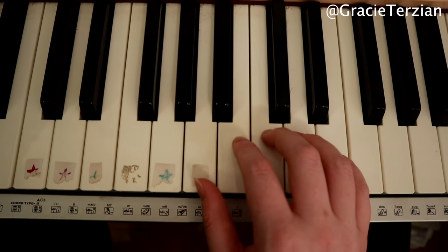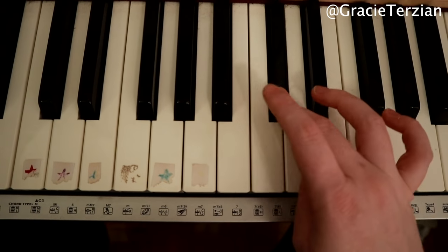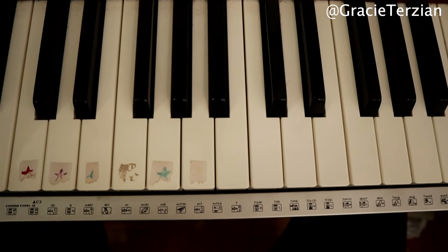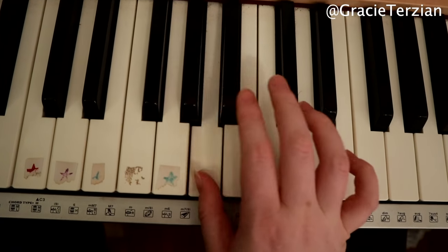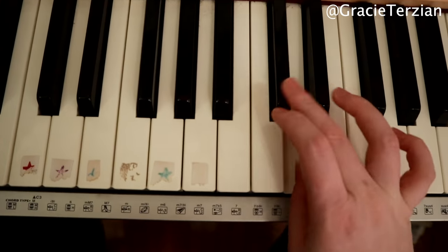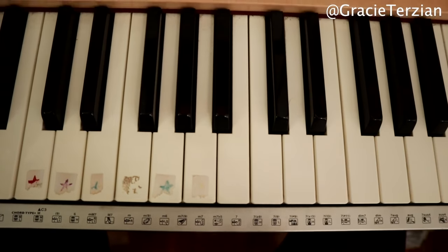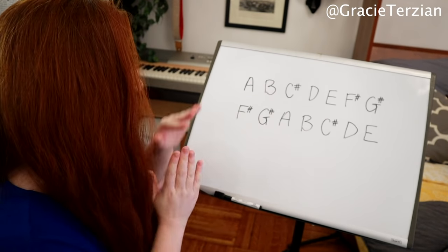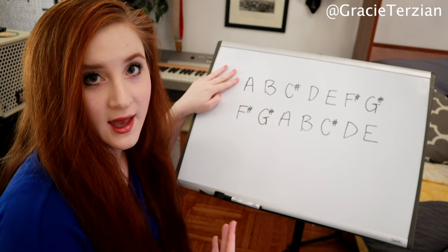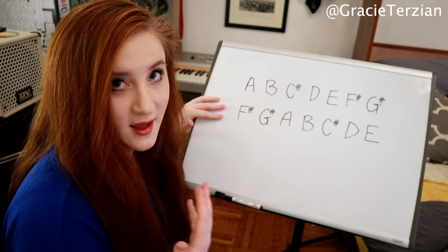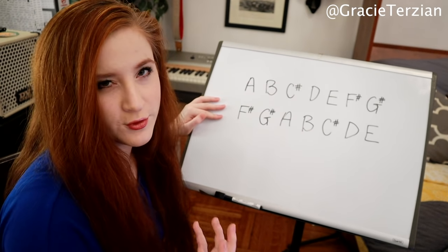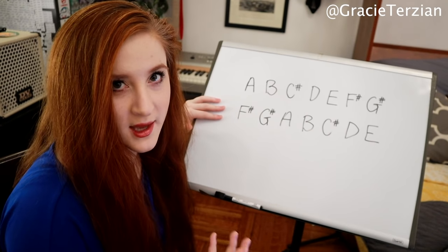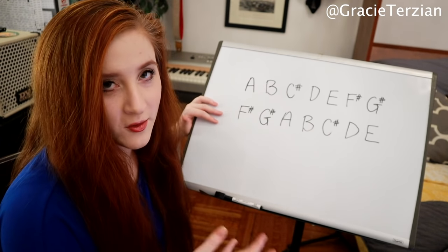Here's an A major scale. And here's an F sharp minor scale. The root of A major is A, and the root of F sharp minor is F sharp. The root is the center of gravity of a key. It's the home base. It's also called the tonic.